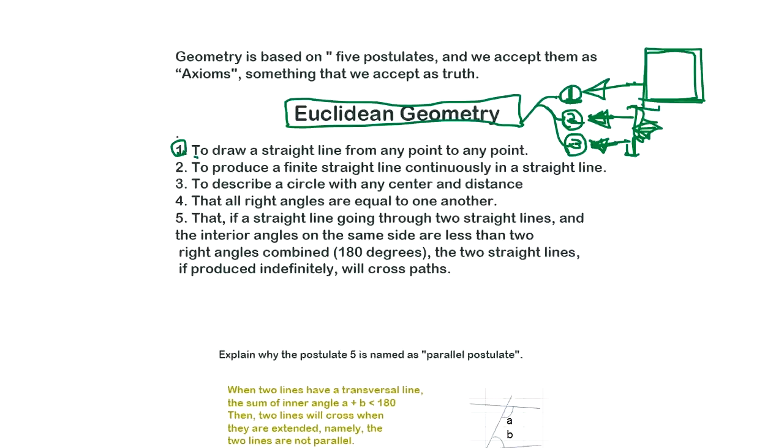The first one is to draw a straight line from any point to any point. You can draw a straight line. If this world, you can never draw the straight line, you draw every time it's curved, then it's not the Euclidean geometry. For example, if you're living on the surface of the sphere, you think you draw the straight line, but actually from 3D viewpoint, it's not going to be straight because you are going on the surface of a sphere. It's curved.